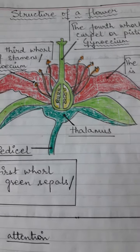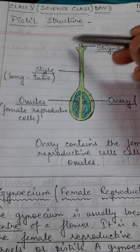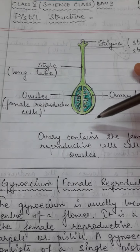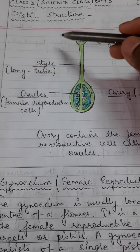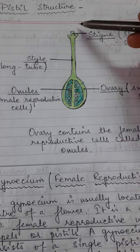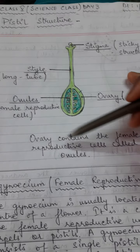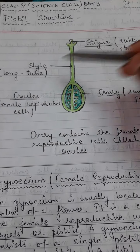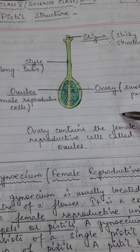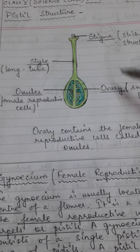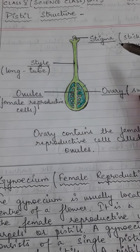Now let's study about pistil in detail. I have drawn here so that you can understand it very clearly. Pistil consists of three parts: stigma, style, and ovary. Stigma, style, and ovary are the three parts of pistil.